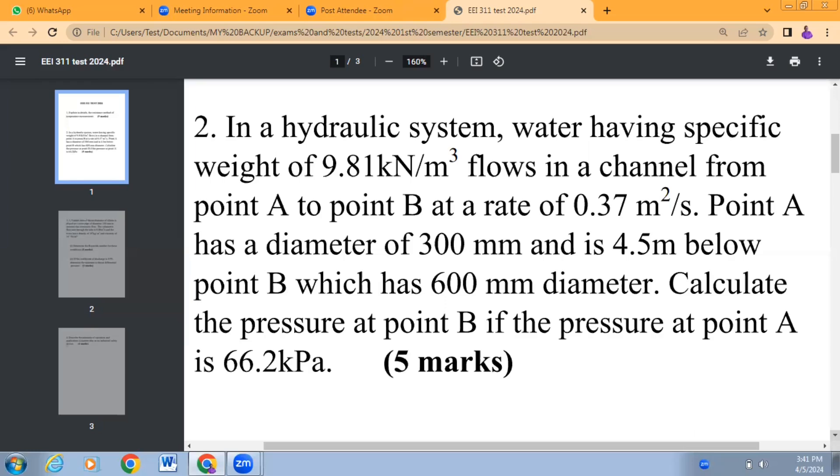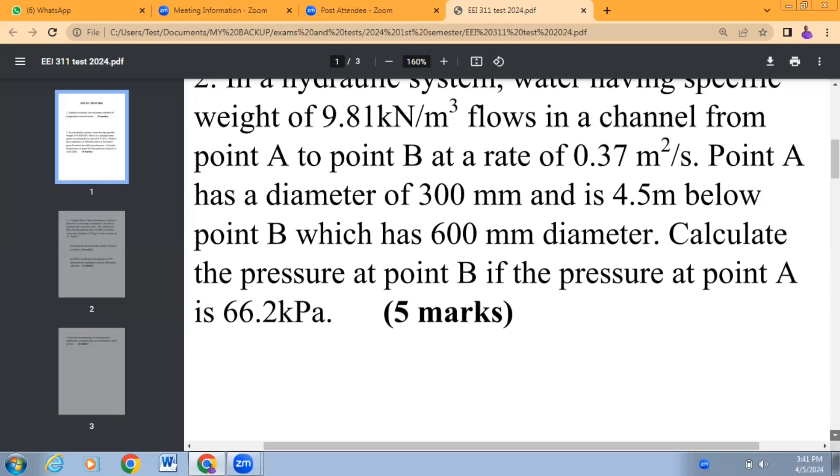It flows at a rate of 0.37 meters cube per second. Point A has a diameter of 300 millimeters and is 4.5 meters below point B, which has 600 millimeter diameter. Calculate the pressure at point B. The pressure at point A is 66.2 kilopascals. This problem has to do with fluid flow in the channel guided by a particular law. We want you to demonstrate your understanding of that law by solving this problem correctly - that is five points.